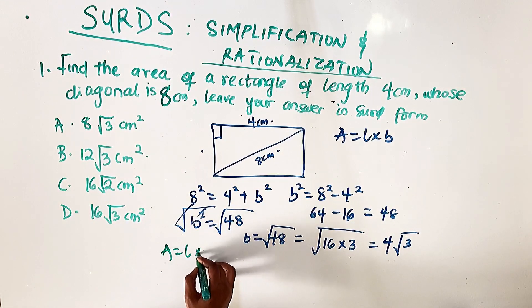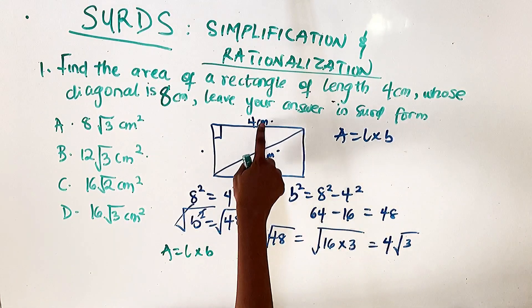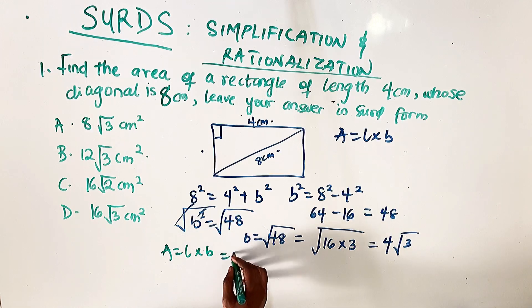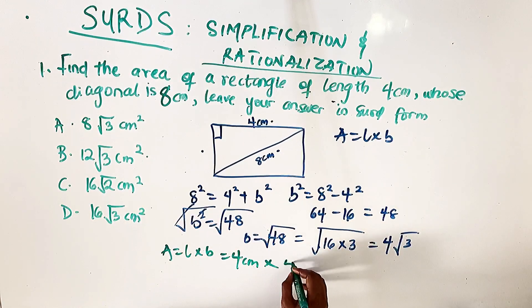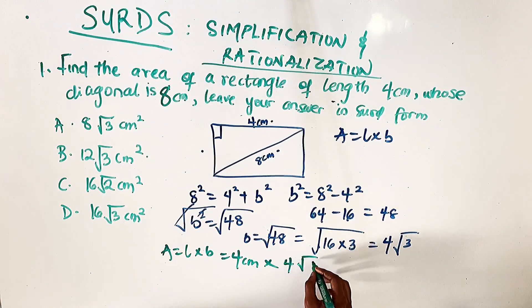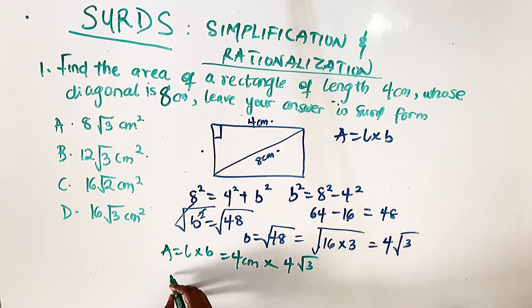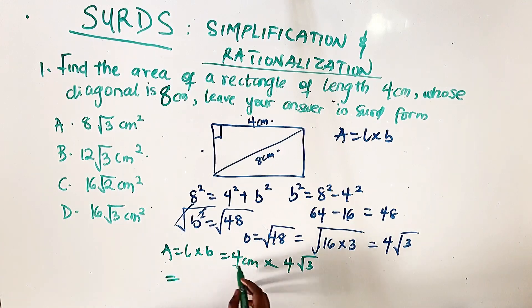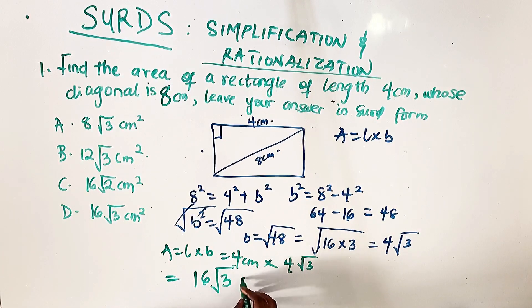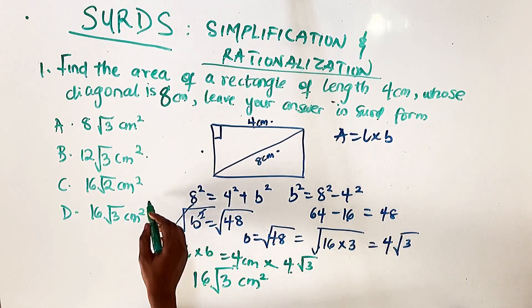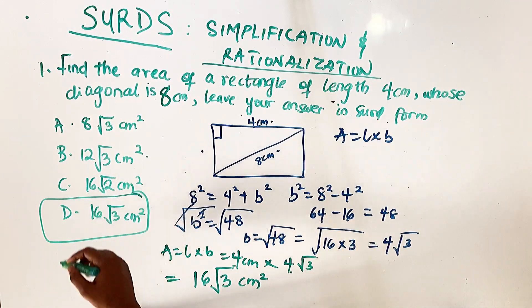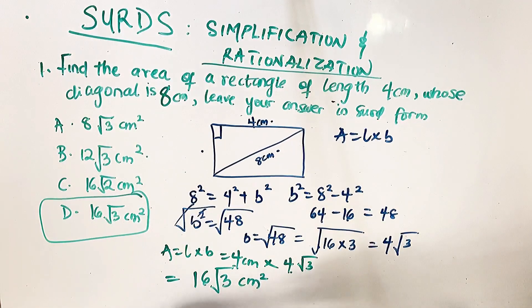Now we can find the area: length times breadth. The length is 4 centimeters and the breadth we've found is 4 root 3. So 4 times 4 root 3 gives 16 root 3 centimeters squared, and that is option D as the final answer.